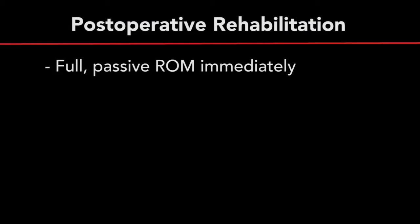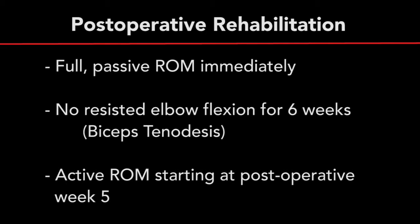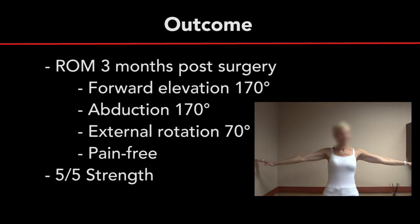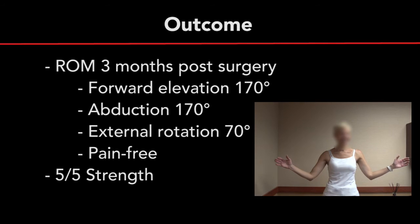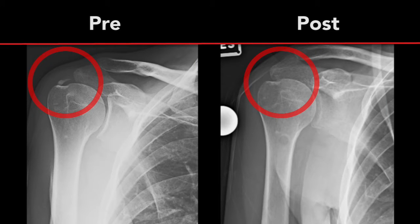Postoperatively, the patient was allowed full passive range of motion immediately, with no resisted elbow flexion for six weeks, secondary to a concomitant biceps tenodesis. Active range of motion was initiated at the five-week mark postoperatively. Three months following surgery, the patient demonstrated pain-free full active forward elevation, abduction, and external rotation, with 5 out of 5 strength with isolated supraspinatus and external rotation strength testing. Postoperative radiographs demonstrate successful excision of all calcium deposits proximal to the greater tuberosity.